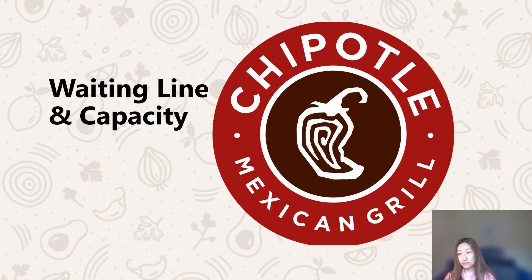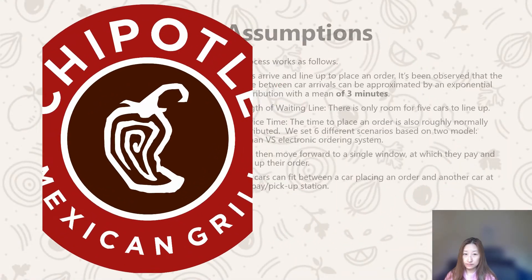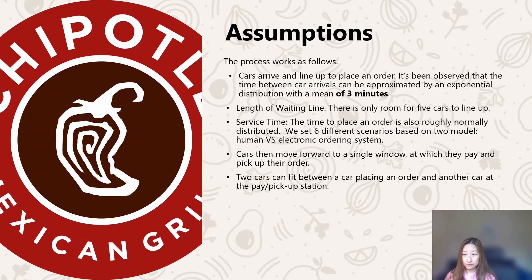Waiting line and capacity. Based on the process flow, we made the following assumptions. We assumed cars' inter-arrival time is approximated by an exponential distribution with a mean of 3 minutes. The length of the waiting line is 5 cars, and 2 cars can fit between the car placing an order and another car at the pay and pickup station.